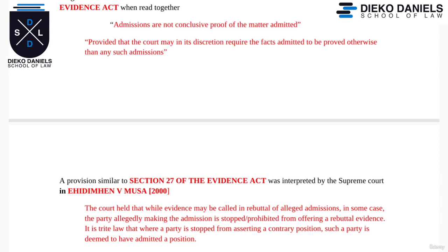Admissions are not conclusive proof of the matter admitted, provided that the court may in its discretion require the fact admitted to be proved otherwise than by such admission. At the same time, the court can tell B: 'You cannot deny this admission.' Both ends are sharp — the court can say B does not have the right to rebut this admission that has been tendered against you. That is why we look at the case of Aedemon vs Musa as our authority.